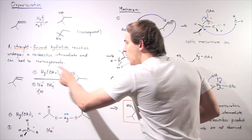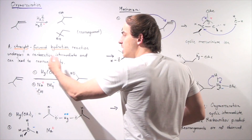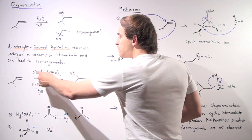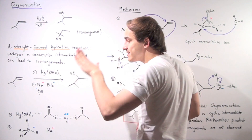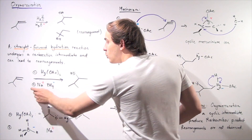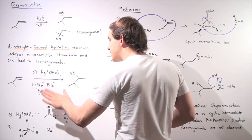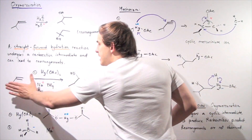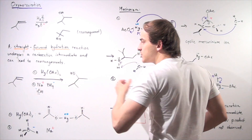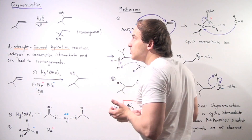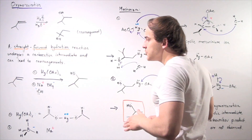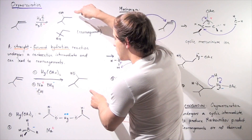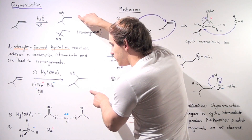In the first step, the solvent is water, used alongside mercury acetate. In the second step, we have NaBH4 as the reagent, again with water as the solvent. If this oxymercuration reaction takes place, we will only form the Markovnikov alcohol product.